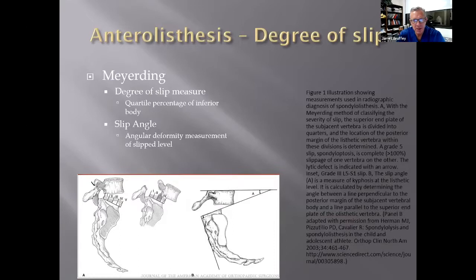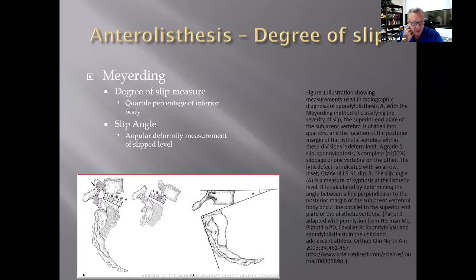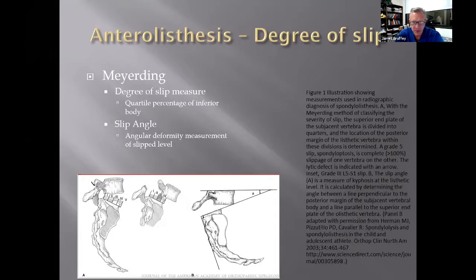Another way to classify spondylolisthesis is by the degree of slip. Meyerding's methodology divides the inferior body into four zones of 25% each. Grade 1 is 0–25%, grade 2 is 25–50%, grade 3 is 50–75%, grade 4 is 75–100%, and spondyloptosis is a complete slip of the cephalad vertebra in front of the inferior one. We can also measure the slip angle — the angle between the superior edge of the inferior vertebra and the superior edge of the superior vertebra. The higher the slip angle, the greater the deformity.